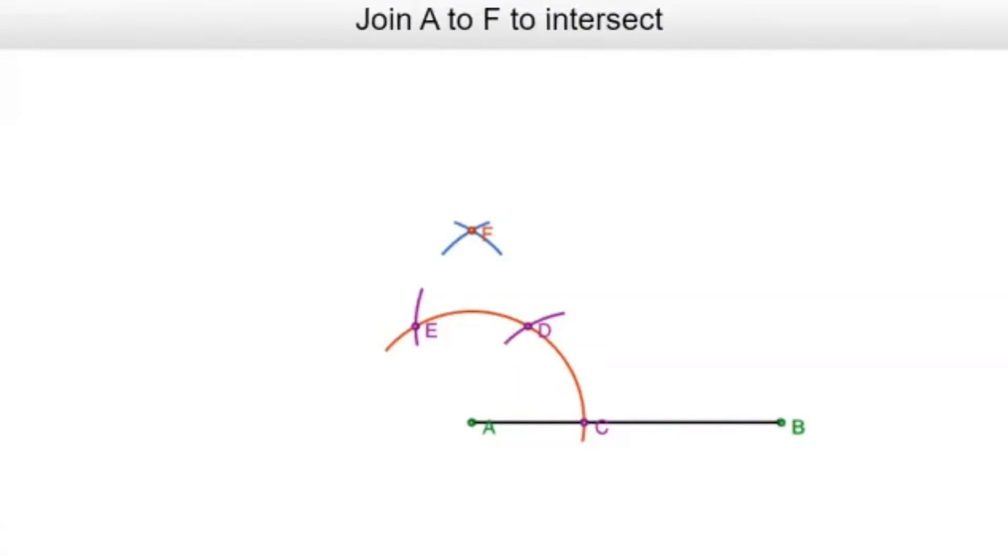So wherever this AF line segment intersects the main arc, I take that point as point G.